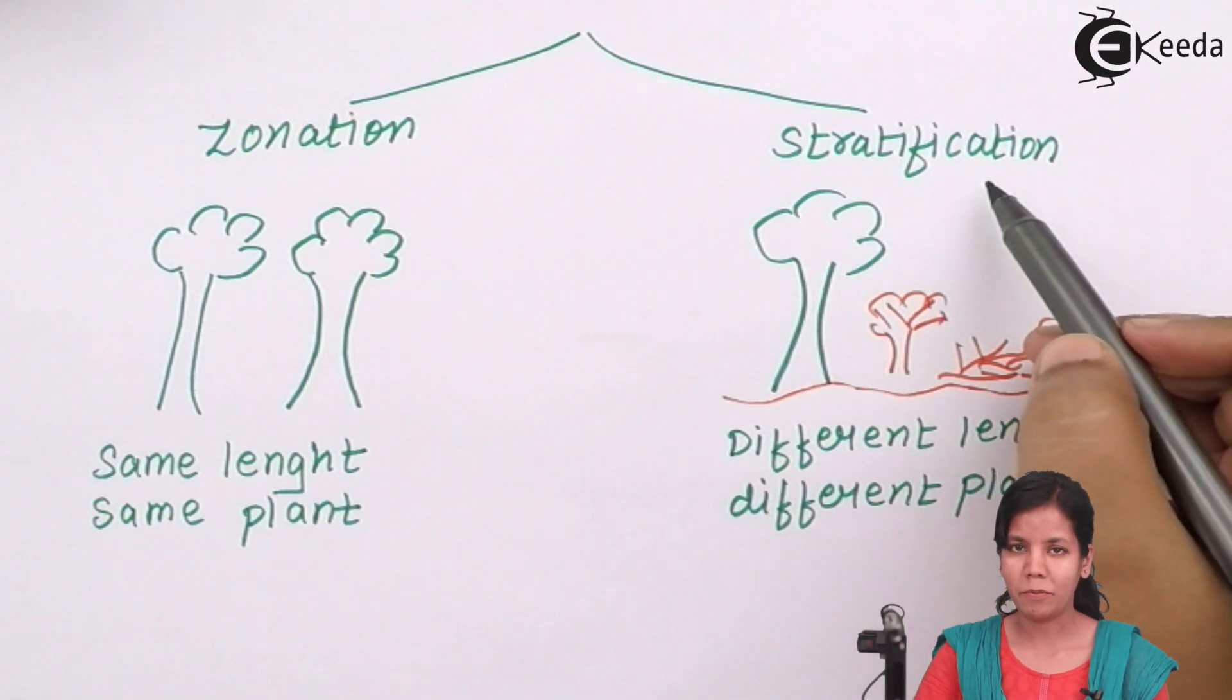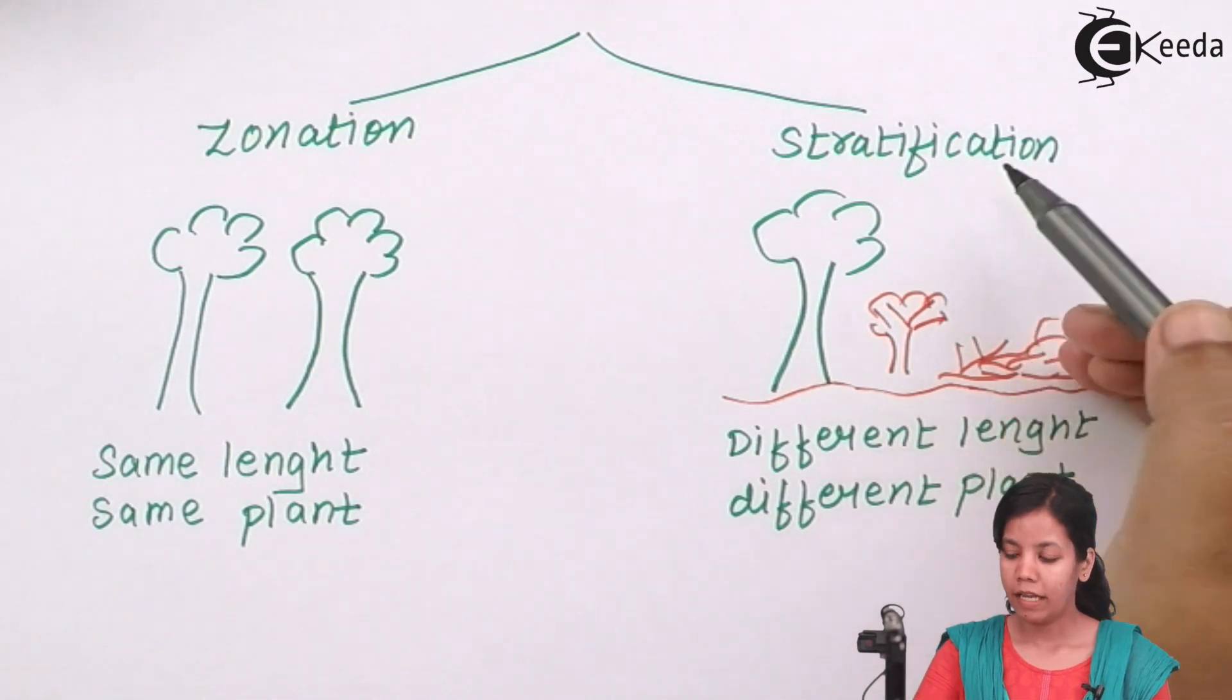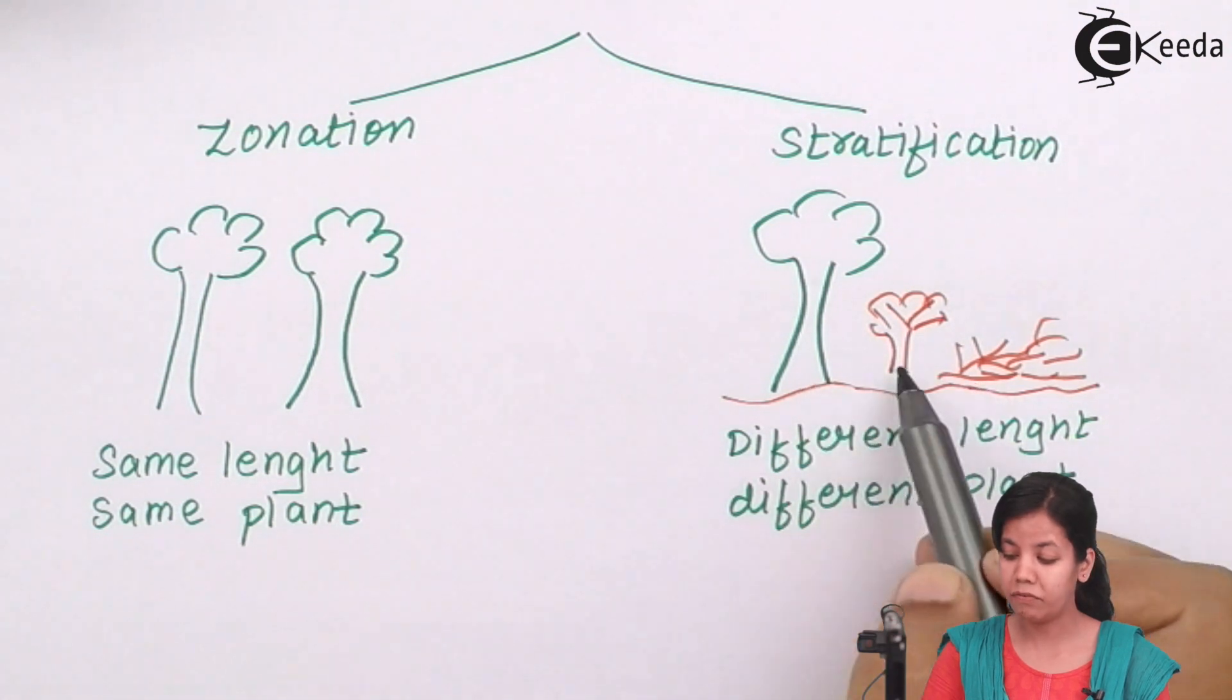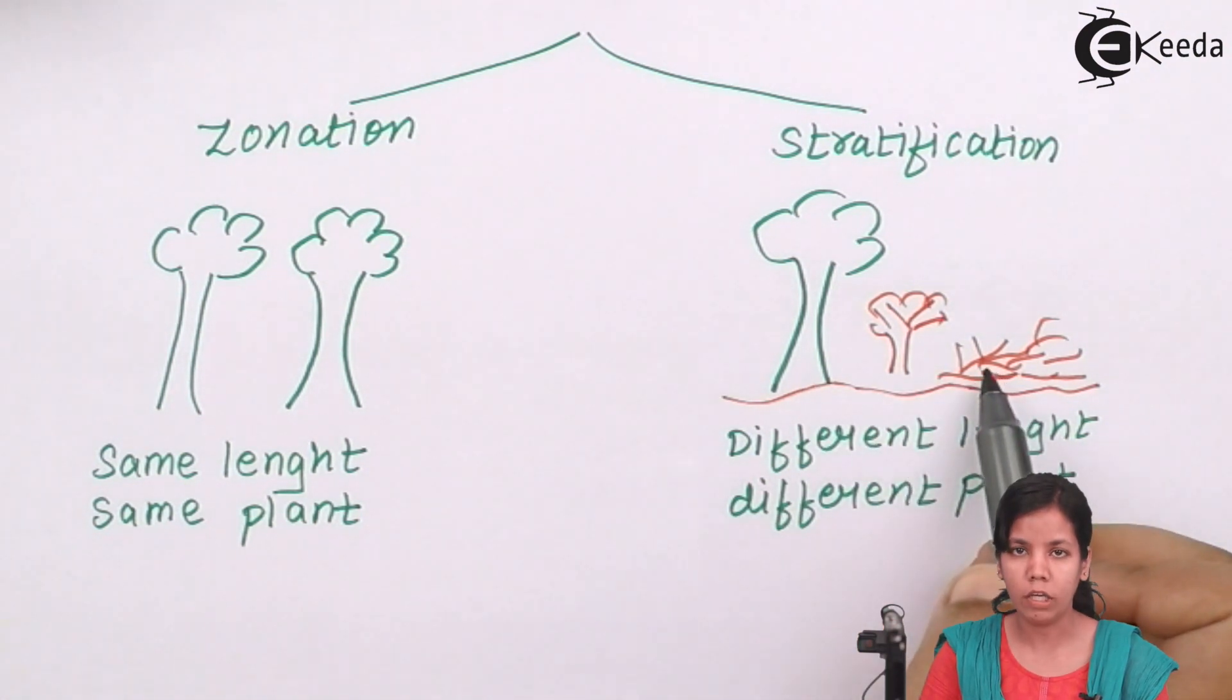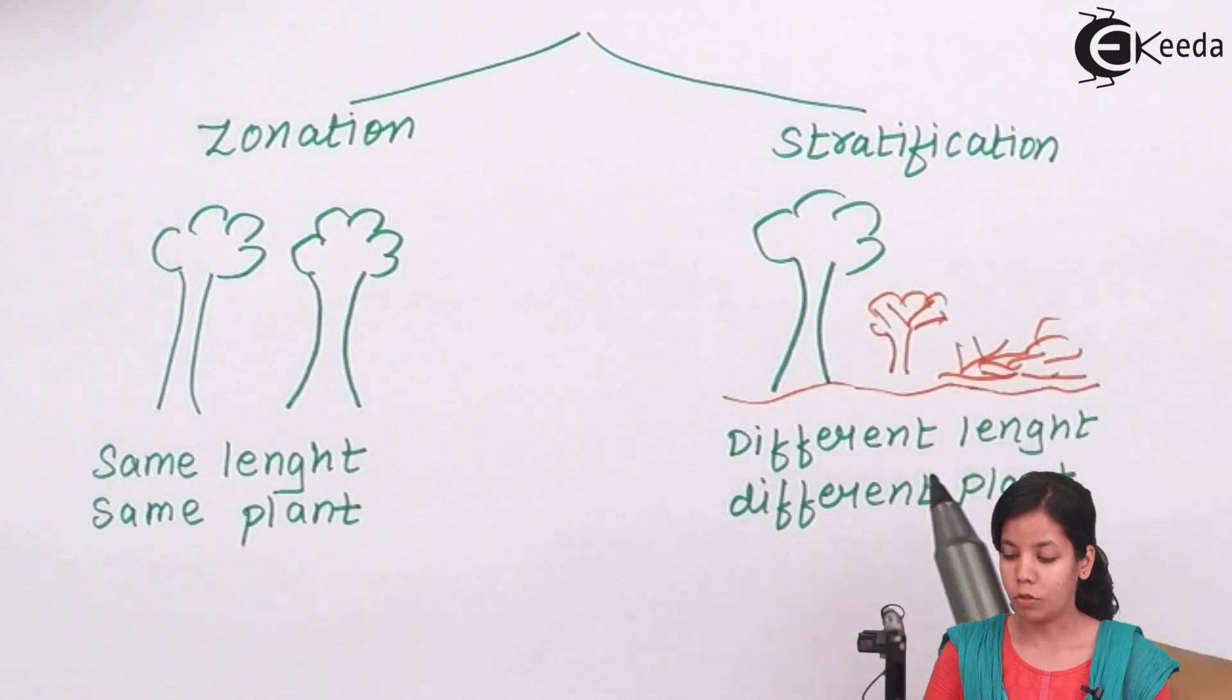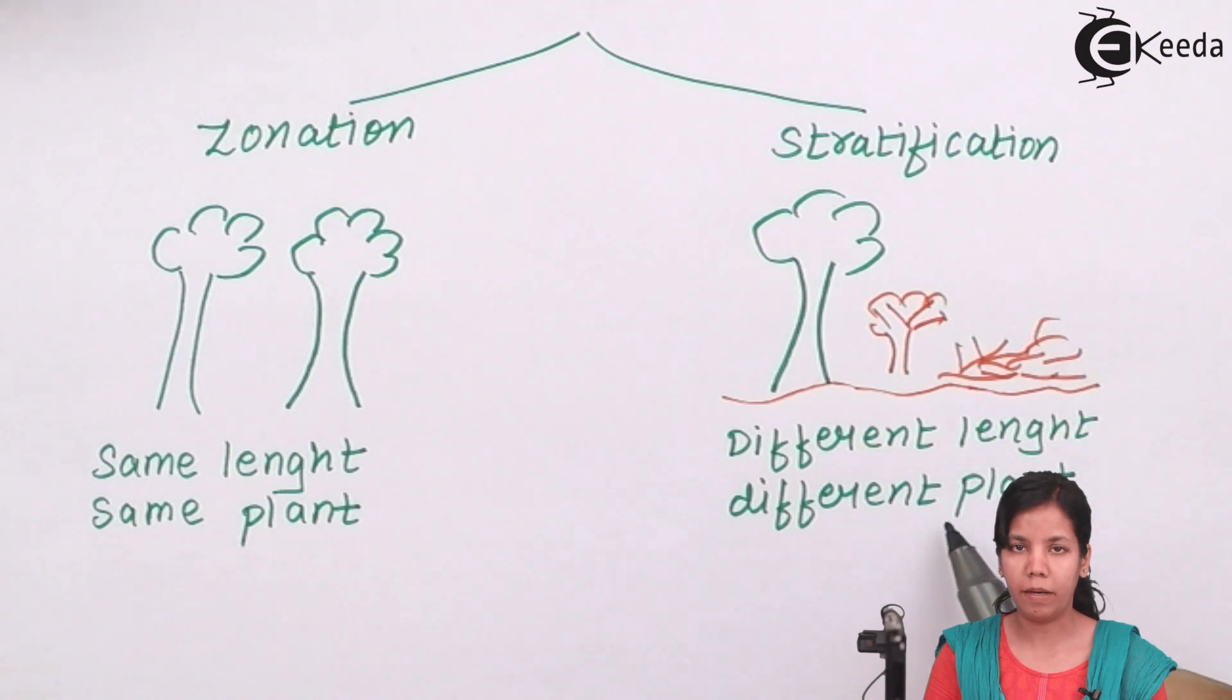The next type of spatial organization is stratification. Stratification means at different levels. In stratification, you can see different kinds of tree which have different length or different age ecology, even they are of different origin. A forest in which there are different kinds of tree - mango, shrubs, grasses, banana, chiku - basically a mixed forest. So stratification has different length of plants with different origin plants.